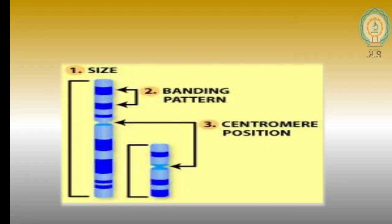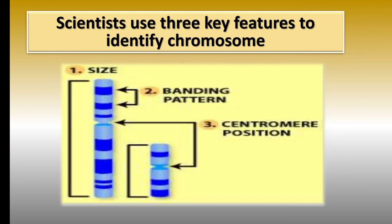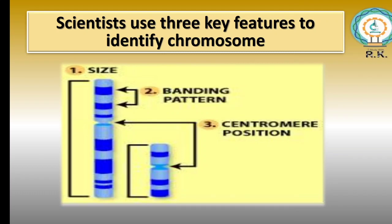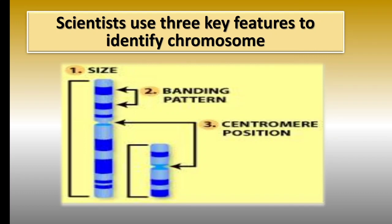Scientists use three key features to identify chromosomes: first, the size of the chromosome; second, the banding pattern; and third, the centromere position.